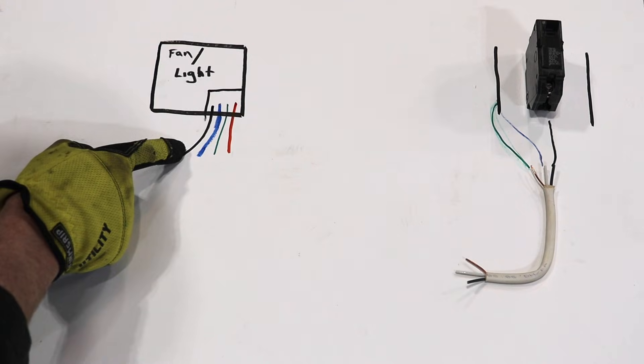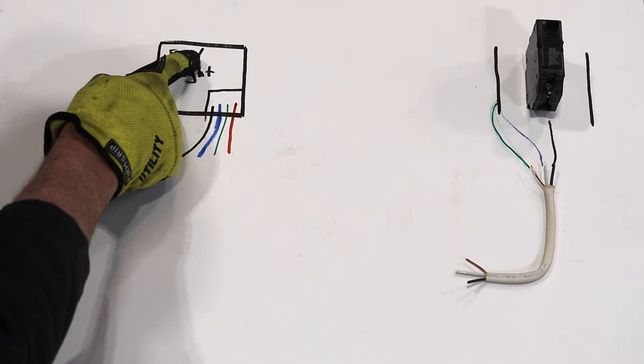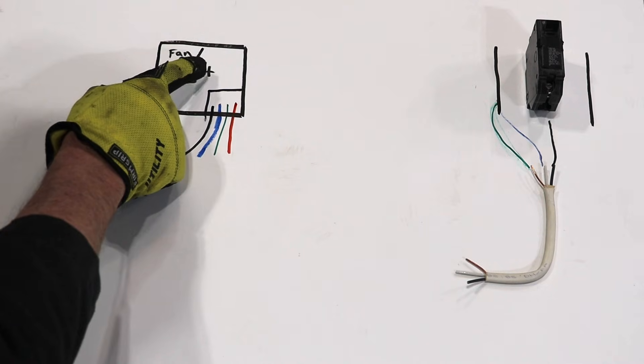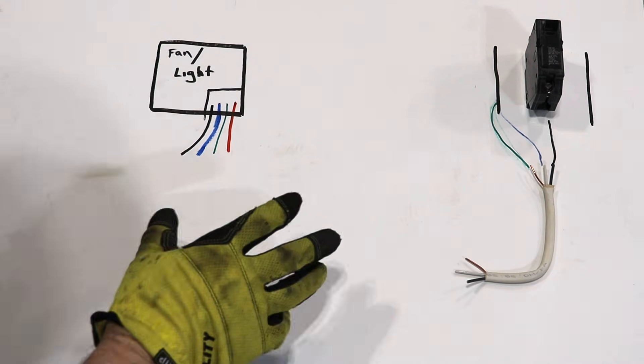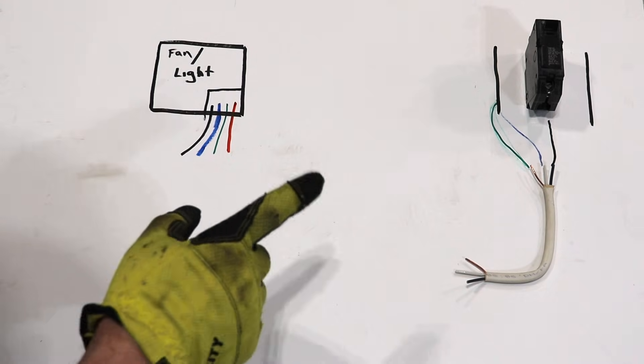And this works because you can still provide power to the fan and the light and you're going to return the power back through the neutral. The reason I want to show the switches last is there's one of two ways to wire this up.